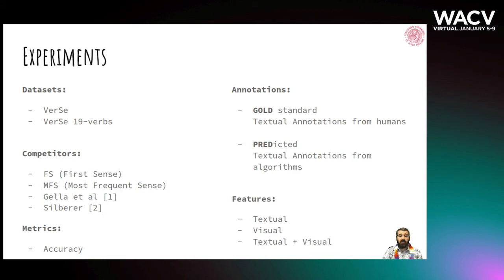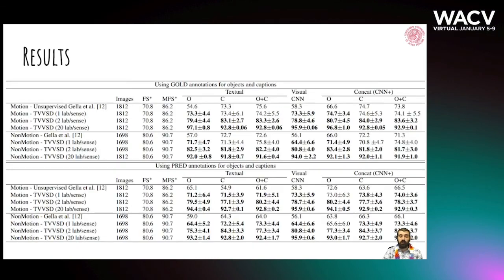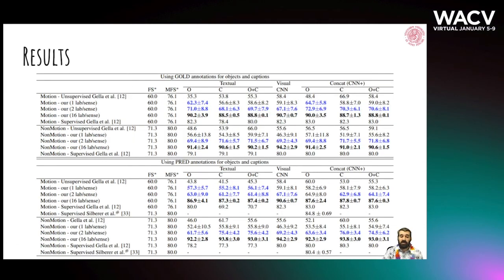The experiments were carried out on the publicly available benchmark for this task, the VERSE dataset, and its variant VERSE 19 VERB, on both textual, visual, and multimodal features. Our competitors are the authors of the dataset, comprising both supervised and unsupervised baselines. Performances were assessed using sense disambiguation accuracy. Two sets of annotations were used: the gold ones, which were handmade, and the predicted ones generated by software. We showed that by considering only two labelled samples per sense, we were able to outperform the unsupervised models, while totally outperforming the supervised model when the labelled set increases, and this holds for both VERSE and VERSE 19 datasets.